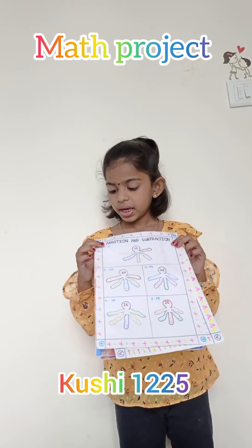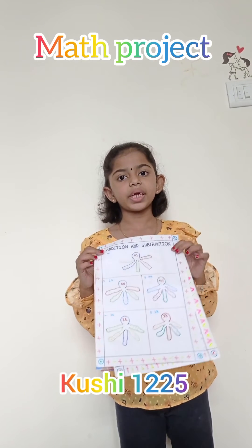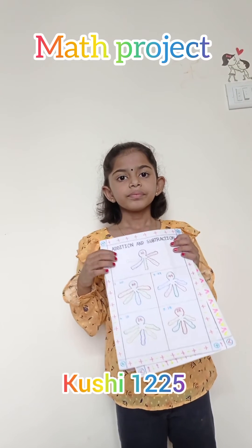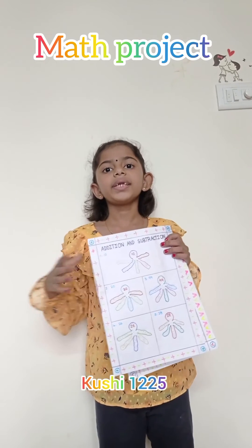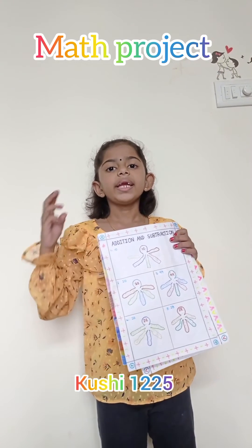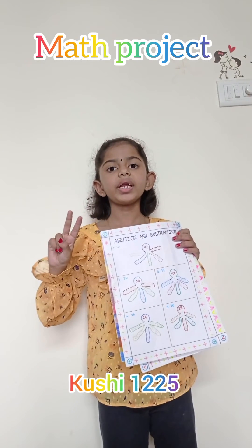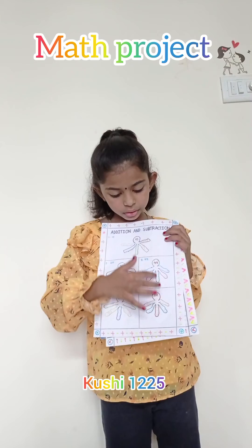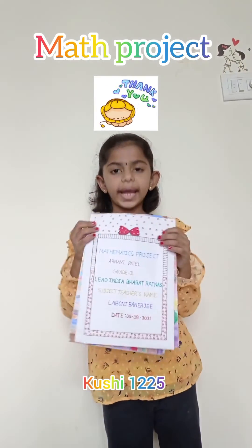I wrote addition and subtraction. I take one octopus. For octopus, I take five legs — three legs for addition and two legs for subtraction. I take five examples and I write down here. Thank you.